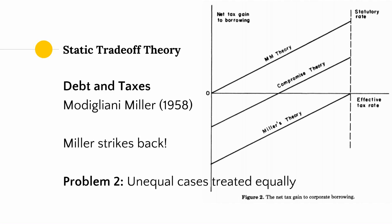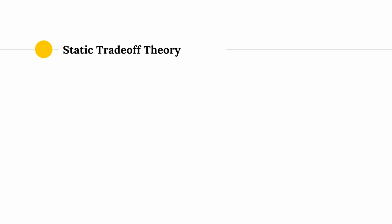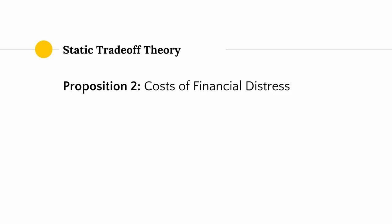This brings us to problem two: unequal cases are treated equally. The proposition which Myers offers, on the other hand, includes costs of financial distress on the right side of the scale. We've already included bankruptcy costs which we've talked about before.